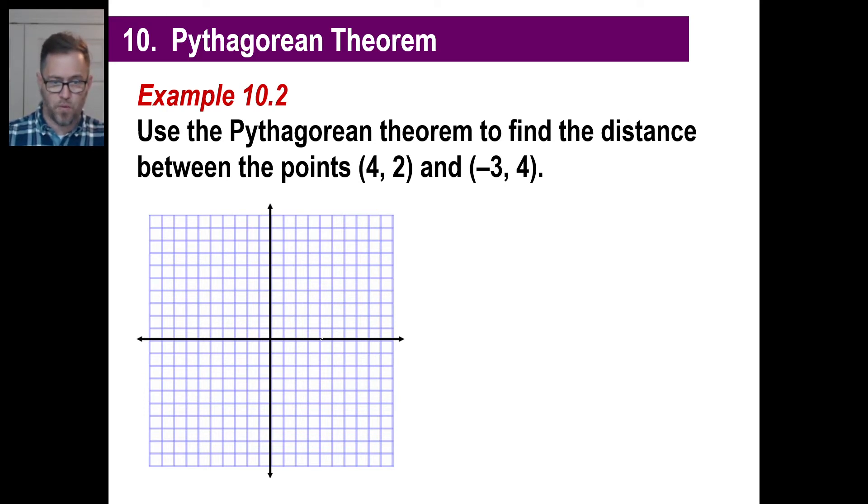Well, we have points (4, 2) and (-3, 4). Let's just knock them out. 1, 2, 3, 4, and then 1, 2. There's your first point. And then negative 3, 4 will be 1, 2, 3, and then 1, 2, 3, 4. Now, if you want to try to find out the distance between this and that, good luck to you. I don't know how in the world people would possibly do that. Anyhow.